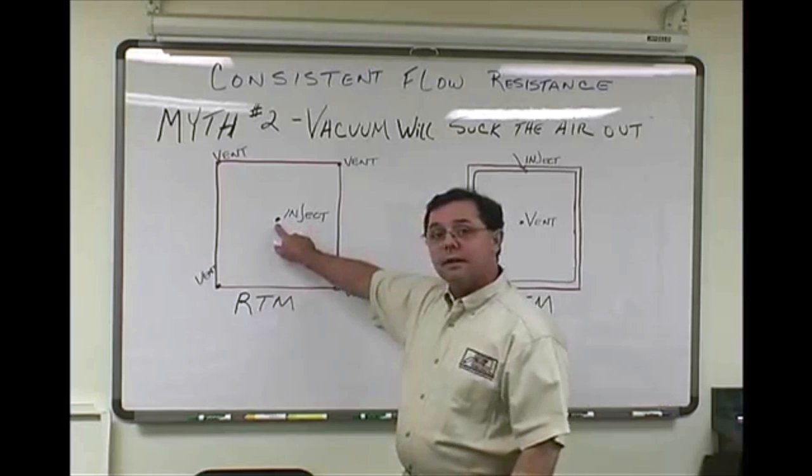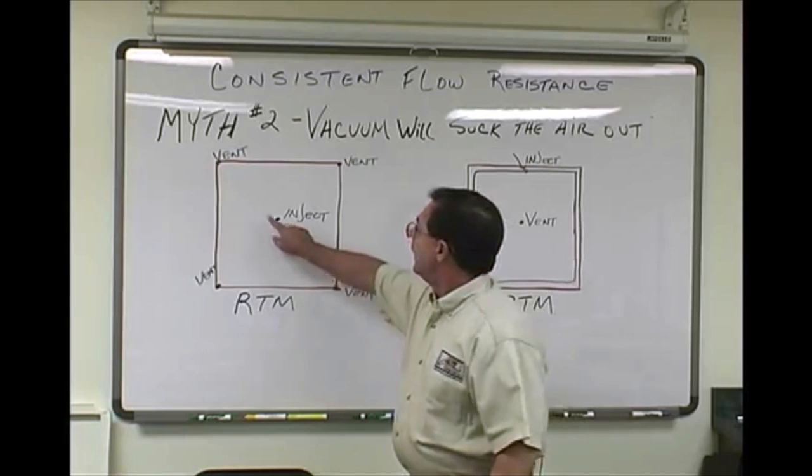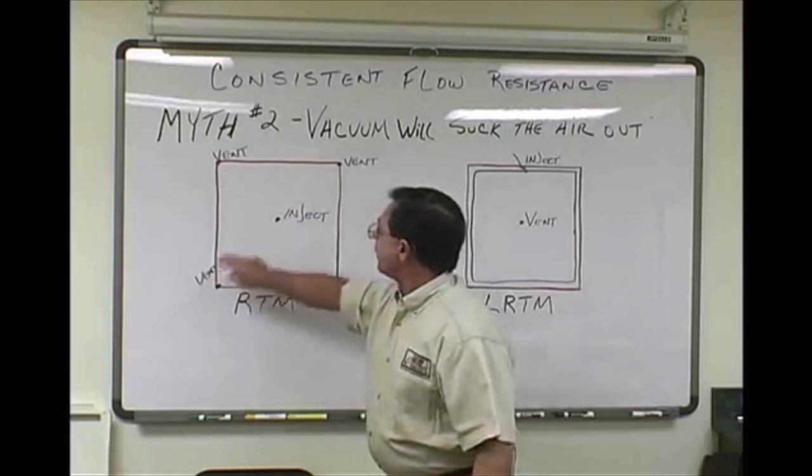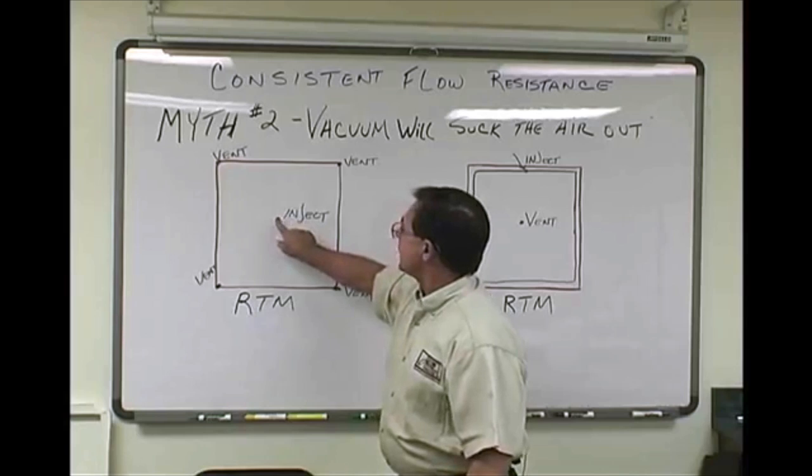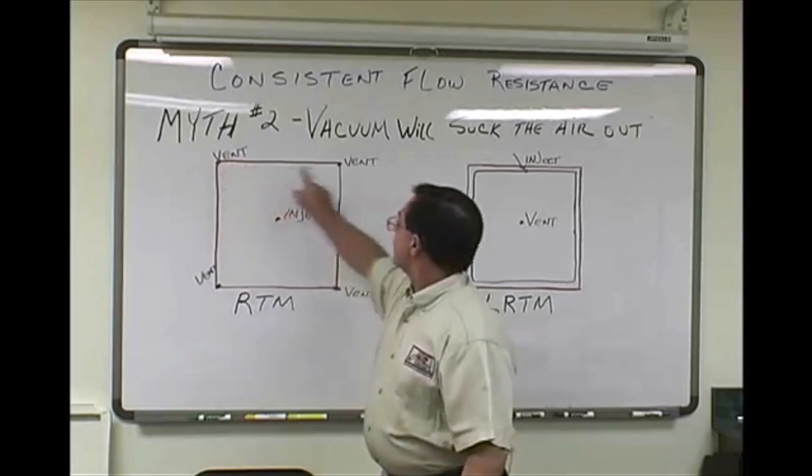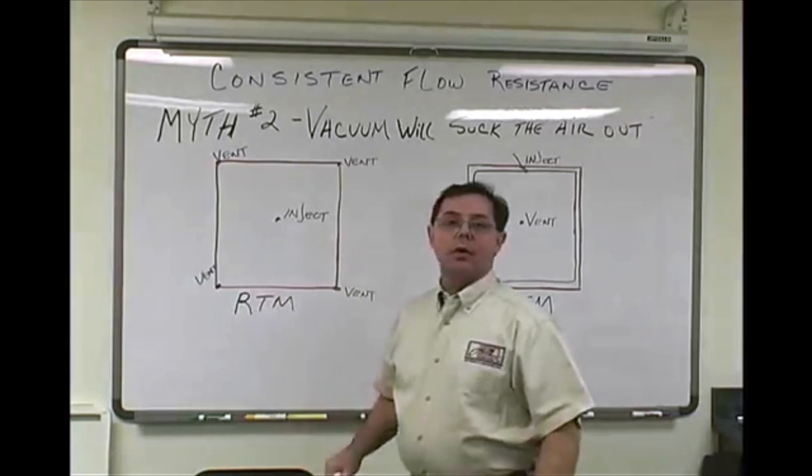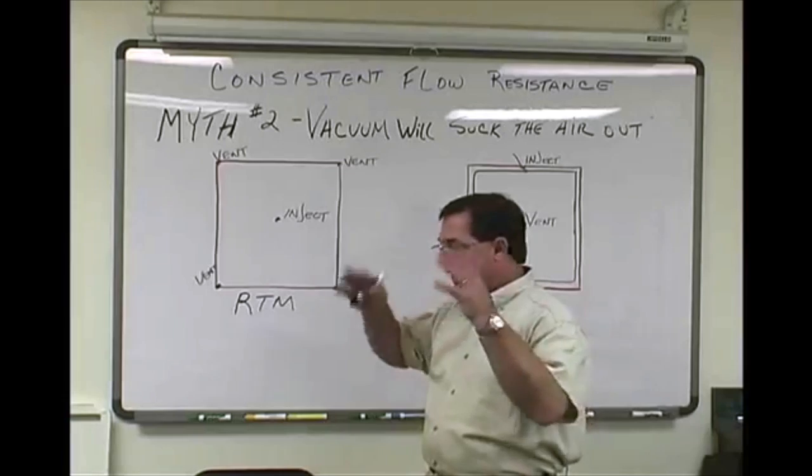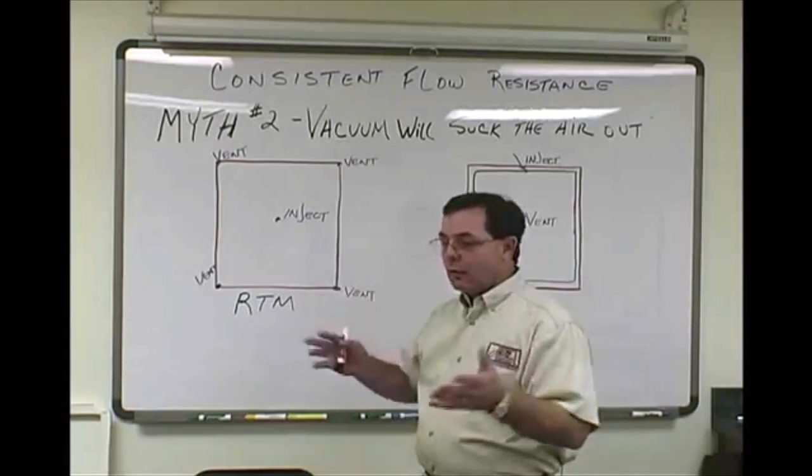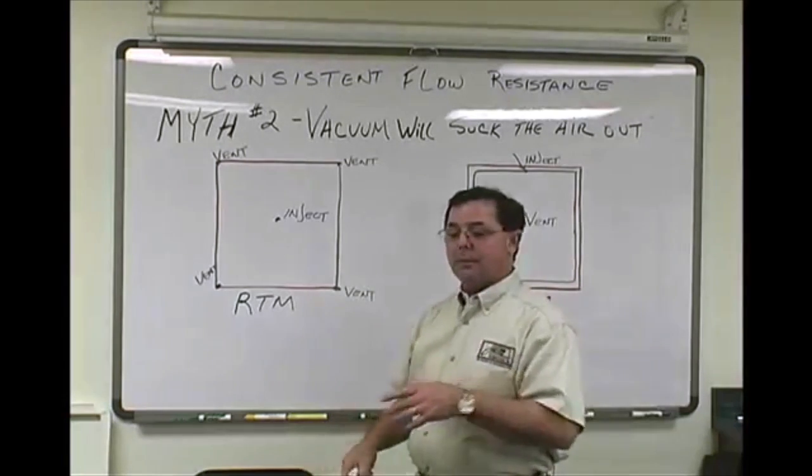Key number two is to understand then what influences the air to leave. Let's talk about our two different types of processes for a minute. When we look at a mold here, let's just talk about a flat shape. If we could add geometry, we'll get into that in a moment. But let's say RTM, what everyone considered the original process - resin transfer molding. In that case, we would normally inject in the center of the part and then these would represent the outer perimeter.